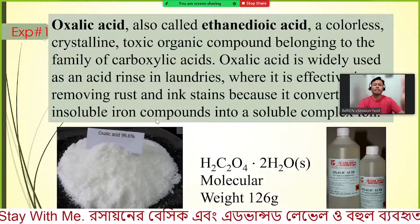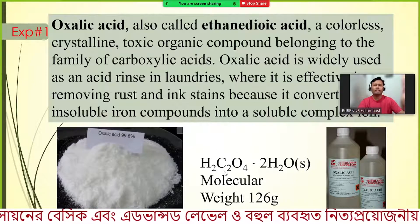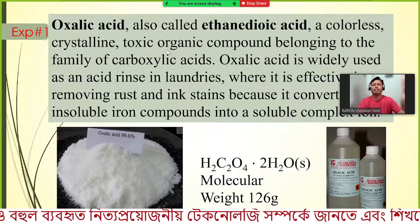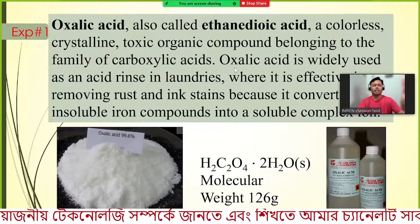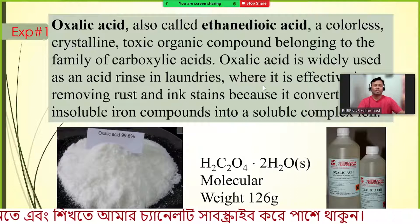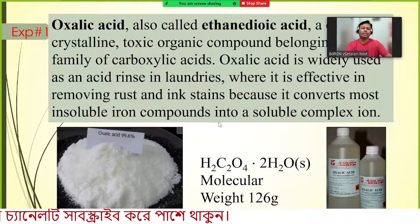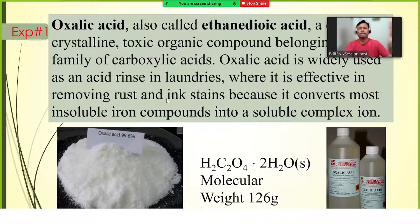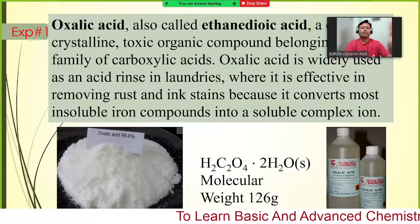Oxalic acid has the molecular formula H₂C₂O₄ and is also called ethanedioic acid. It is a colorless crystalline toxic organic compound belonging to the family of carboxylic acids. Oxalic acid is widely used as an acid rinse in laundries because it is effective in removing rust and ink stains by converting most insoluble iron compounds into soluble complex ions.